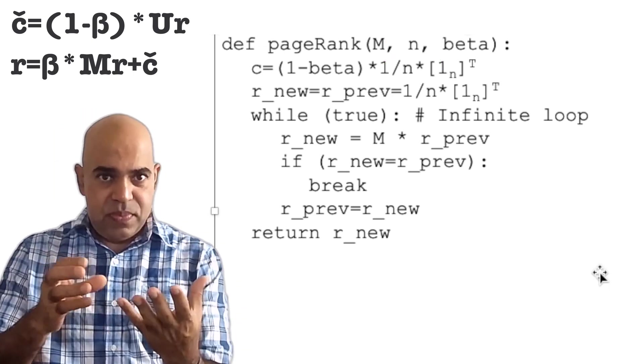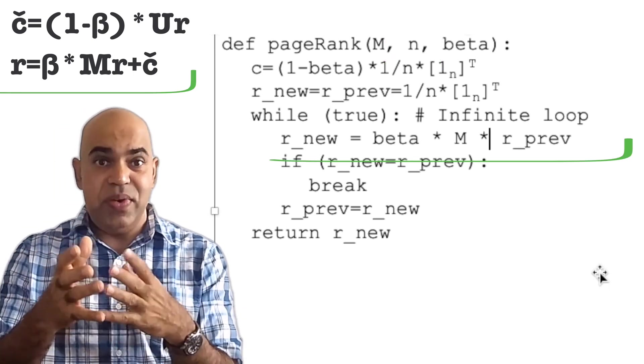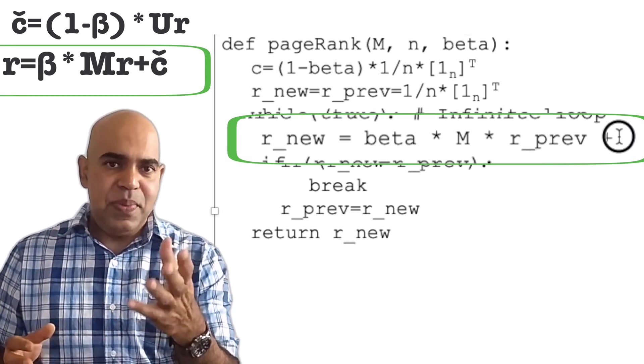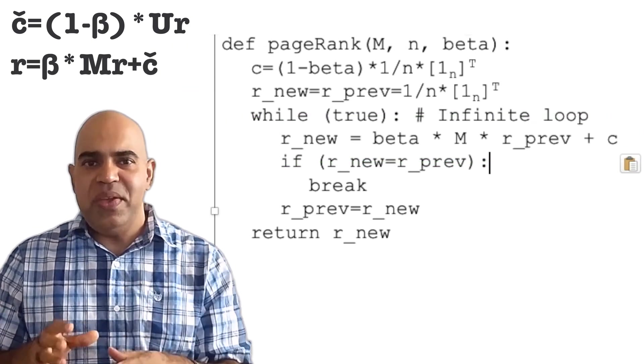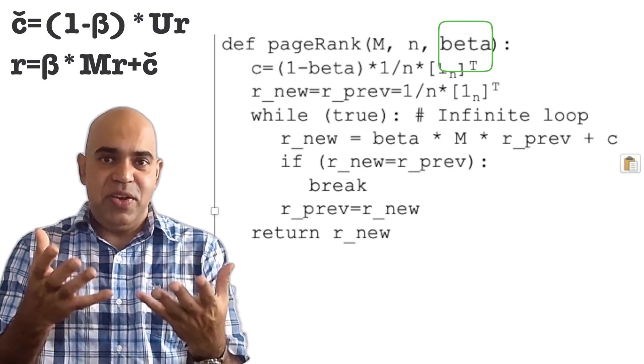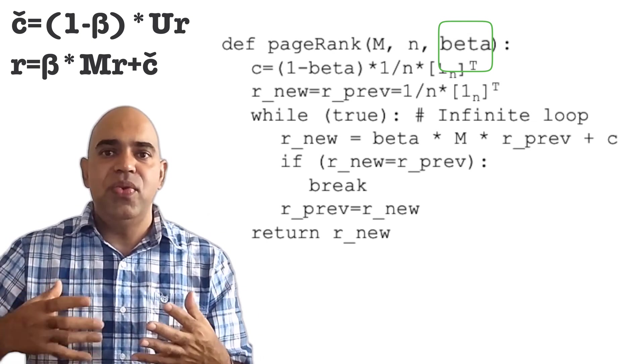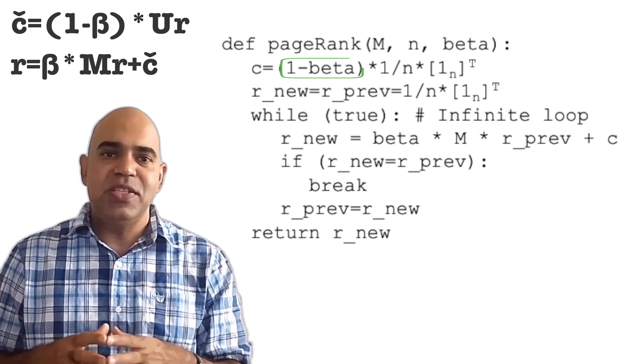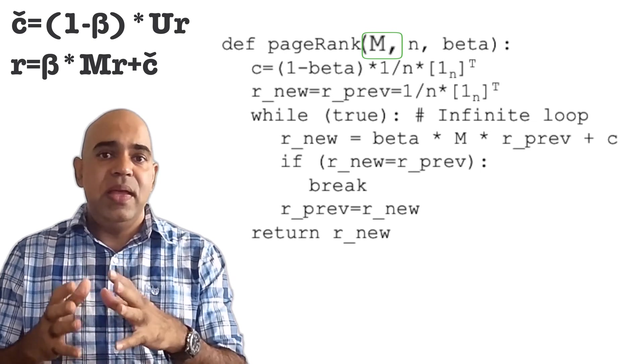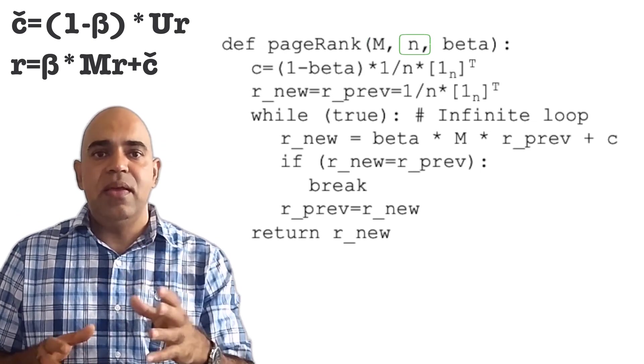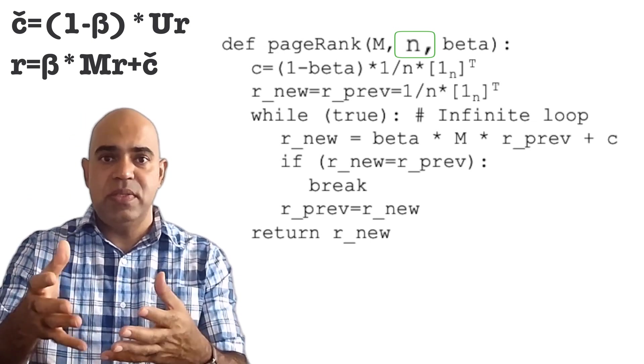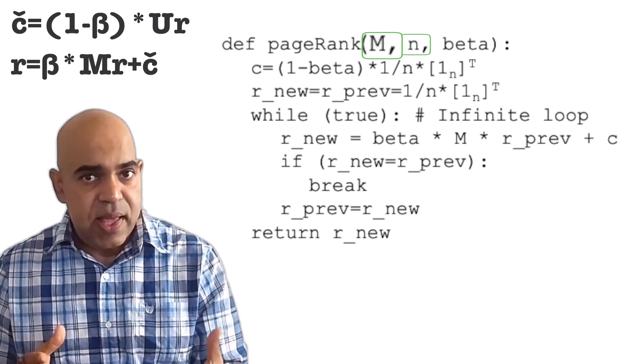Now, we will change the pseudocode to reflect the formula R equals beta times M times R plus C. A quick review of the entire pseudocode. Beta is the probability that the random surfer will use a hyperlink to go to another website. 1 minus beta is the probability that the surfer will teleport. M is the hyperlink transition matrix. N is the number of websites. N is actually the number of rows or columns of this column stochastic matrix M.